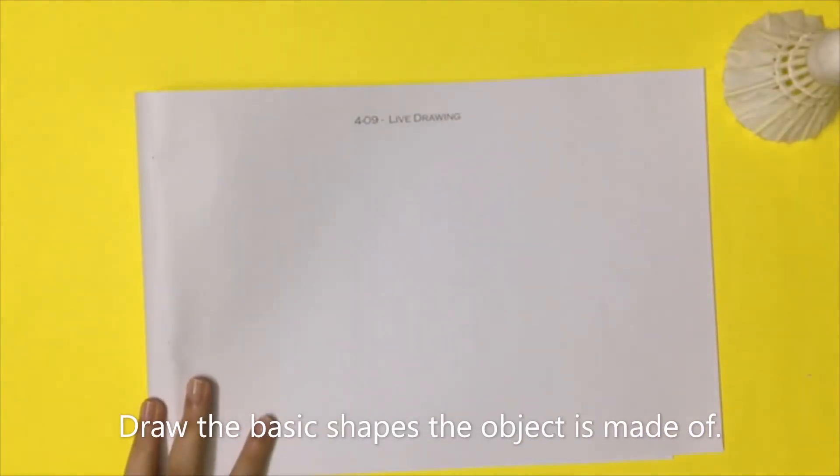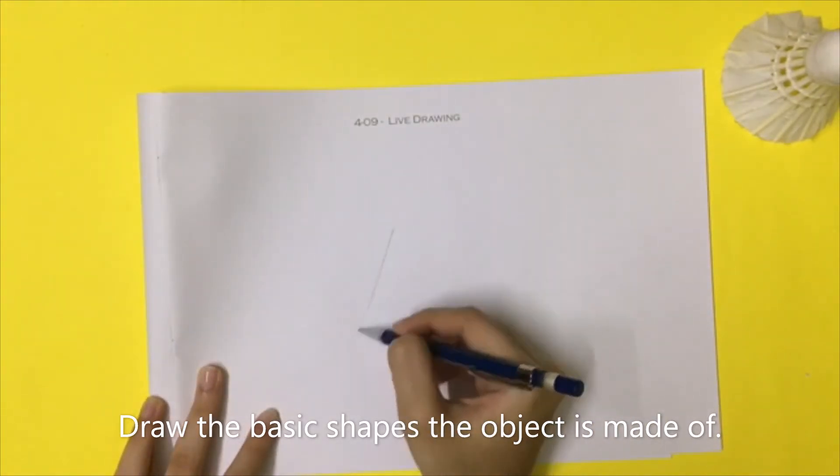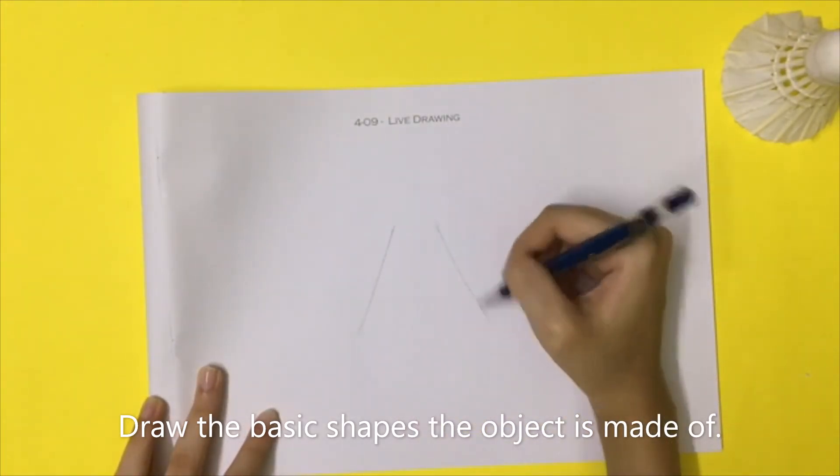Draw the basic shapes the object is made of. This shuttlecock is a triangle with a semi-circle on top.